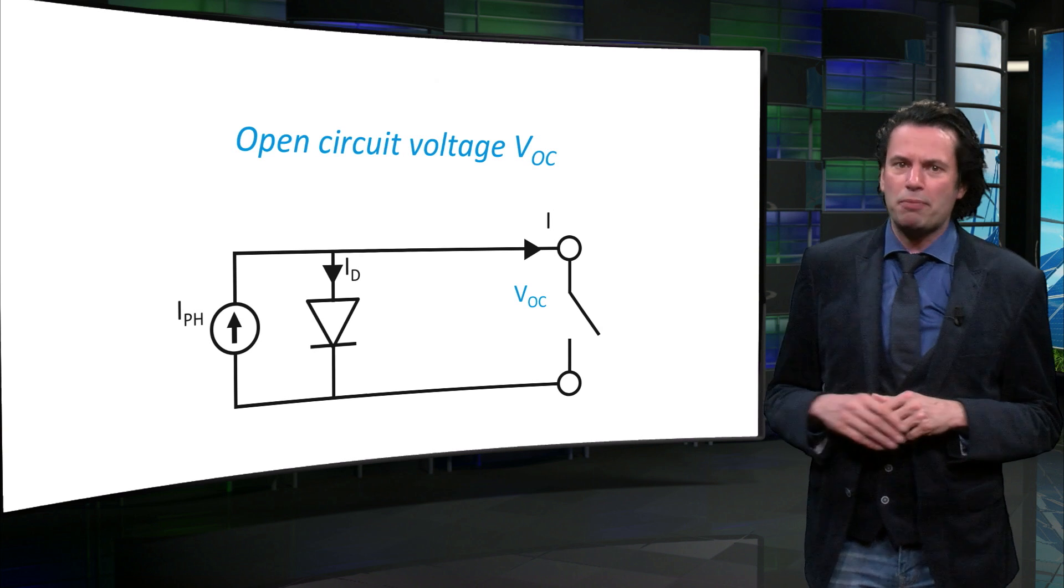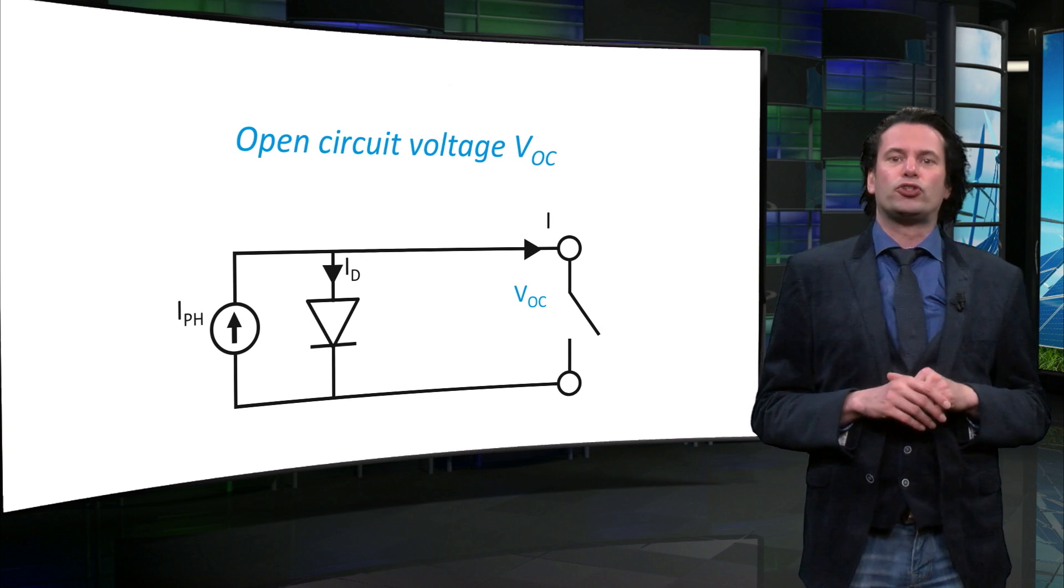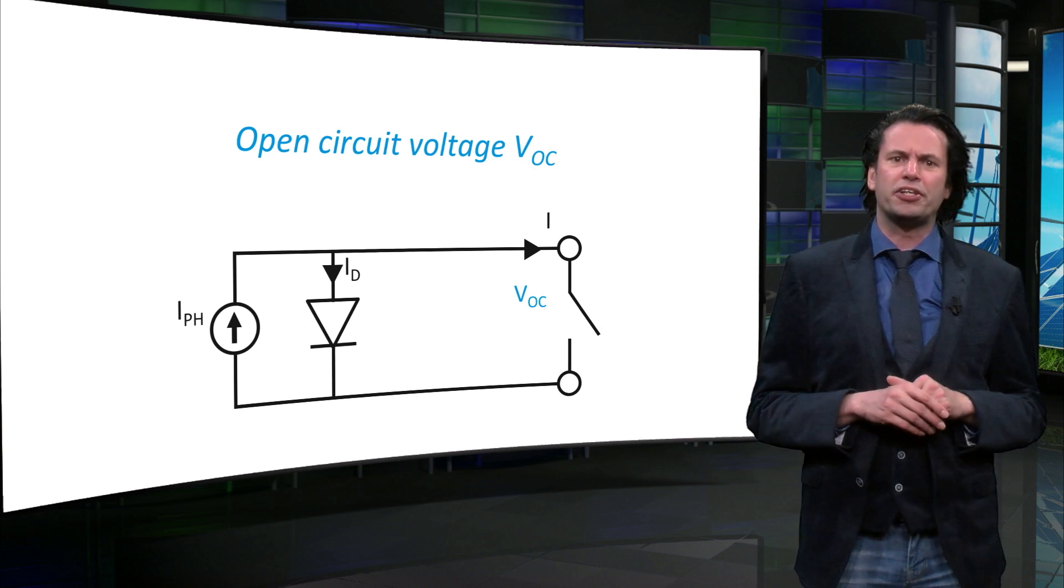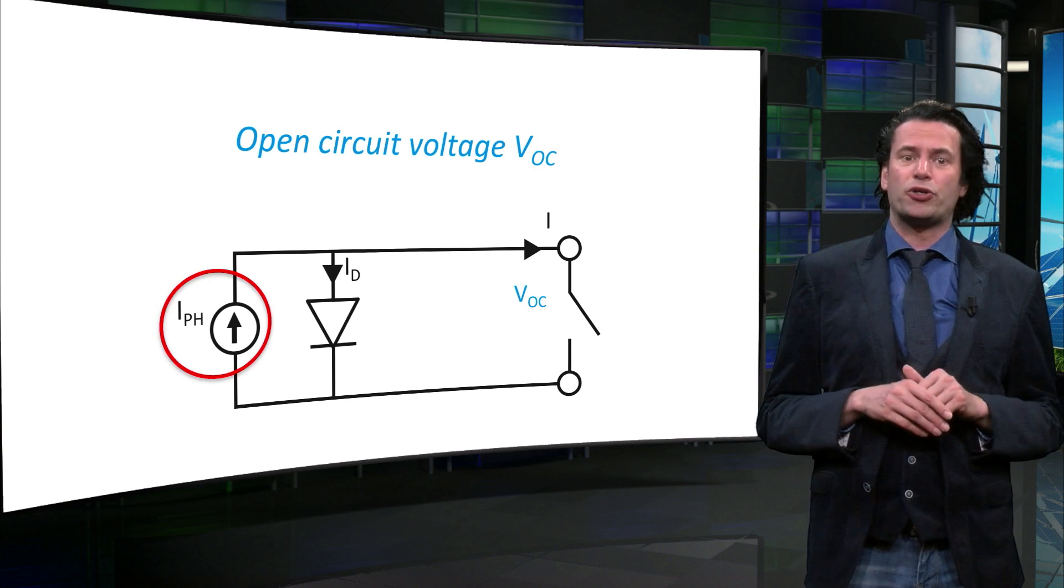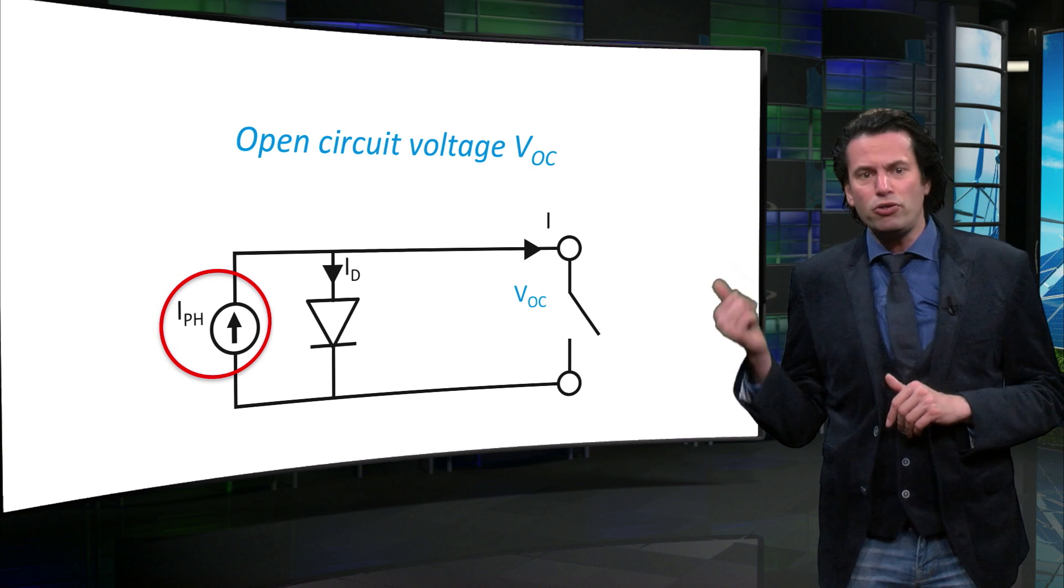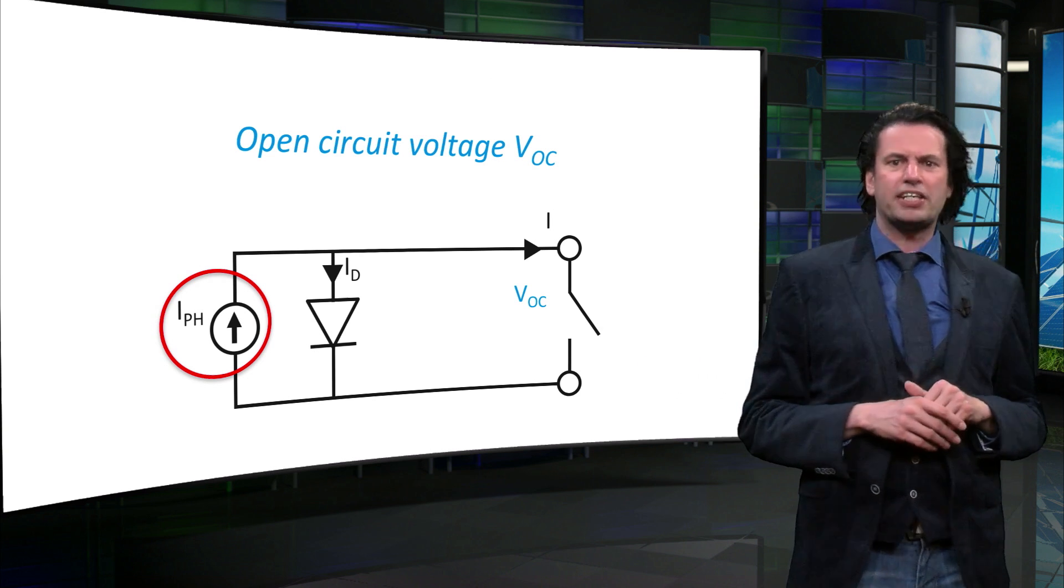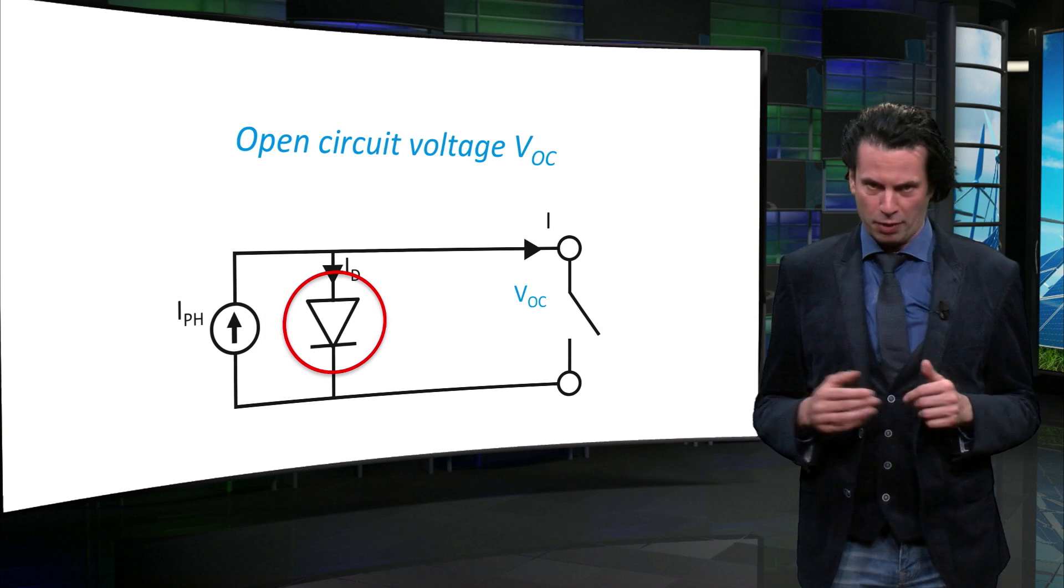An ideal solar cell can be represented by an electrical circuit, as shown here. The photo-generated current is represented by a current source, and the diode characteristics of the solar cell in the dark is represented by the triangle-shaped symbol.